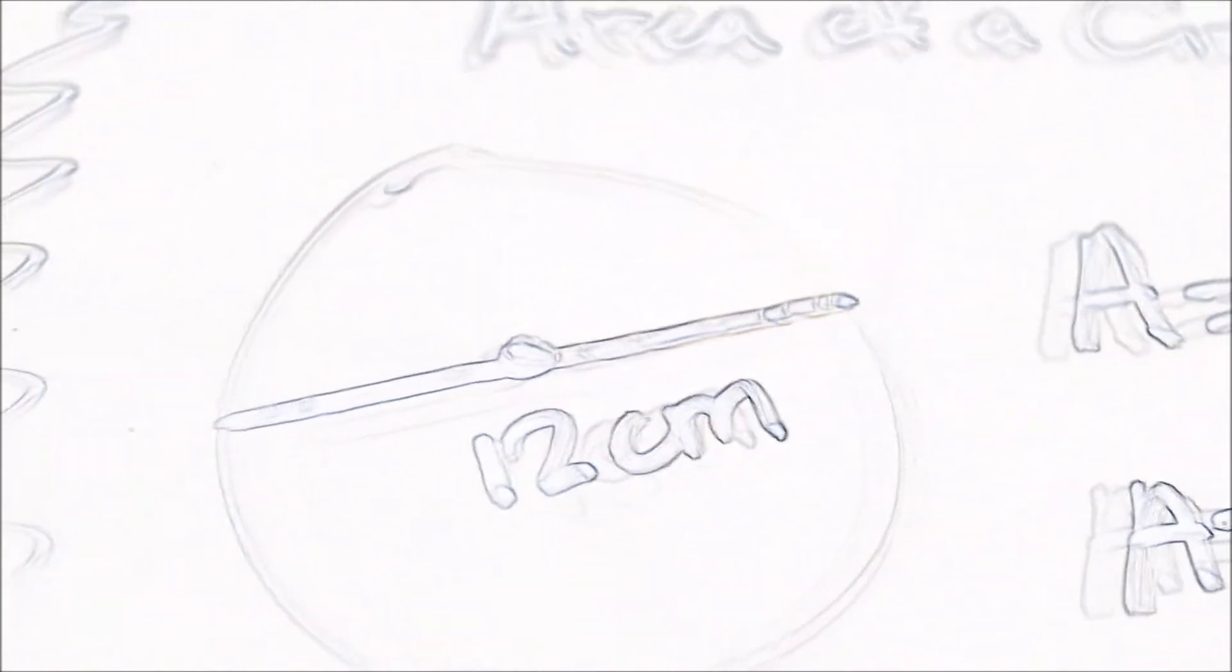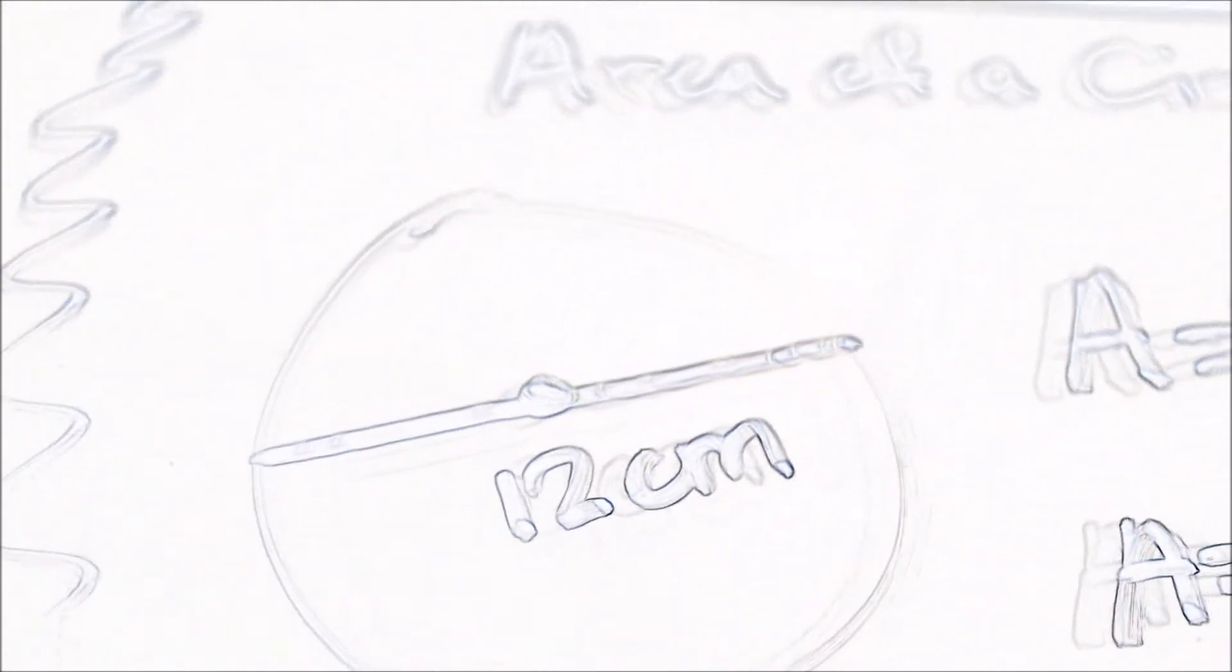To find the area of a circle, we know the diameter is 12. So half of that will be the radius, which is 6.